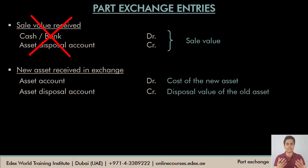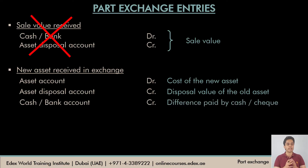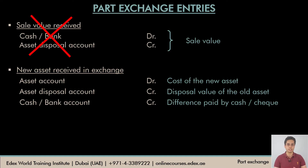The old asset value is credited to the disposal account because that is a gain for the business. The difference between the cost of the new asset and the value attached to the old asset is paid by cash or cheque — so cash or bank is credited. If the asset is bought on credit, the supplier account is credited instead. Apart from this third entry change, all other entries remain the same: transfer of cost, transfer of accumulated depreciation, and transferring profit or loss on disposal.